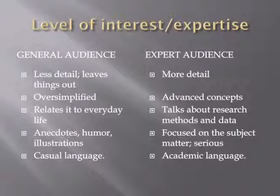Then in the middle, there's the whole range of information sources that are intended for adults who are interested in the topic but are not experts. Examples are articles in U.S. News and World Report or National Geographic, non-fiction books that you would commonly find in Barnes and Noble, and some good documentaries. These kinds of information sources provide some details, define the vocabulary, and explain the basic and maybe even intermediate concepts, while trying to appeal to the interests of people who are not making it their life's work to understand the subject matter.